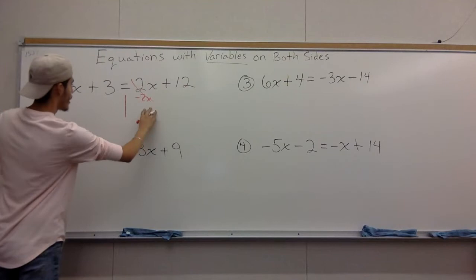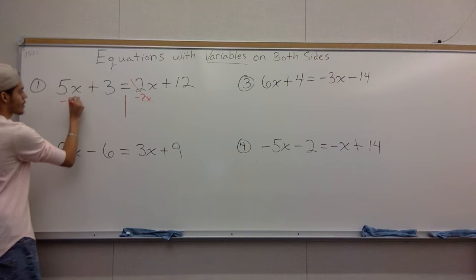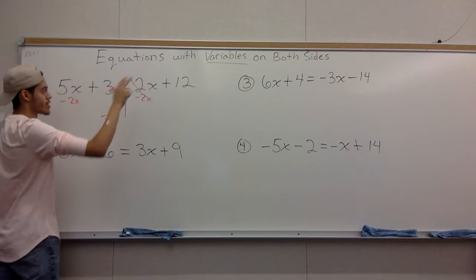Subtract 2x on one side and cross it out, then we don't have to deal with it. Remember what you do to one side, you can do to the other as well. 5x minus 2x, you get 3x.